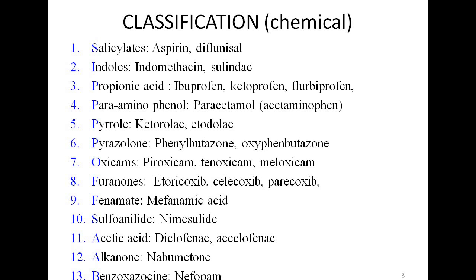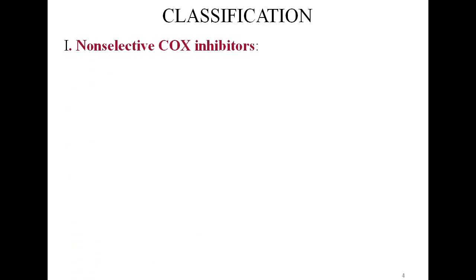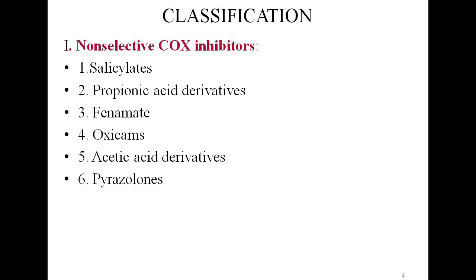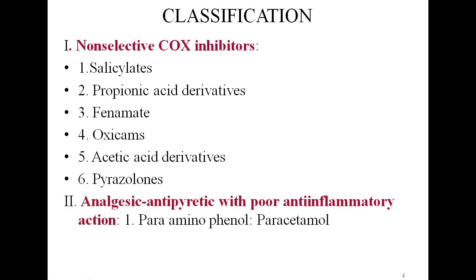When a question is asked on classifying NSAIDs and the basis for classification is not specified, we can use the next method of classification — based on whether they are selective COX-2 inhibitors, non-selective COX inhibitors, or whether they have anti-inflammatory action or not. Under the non-selective COX inhibitors, we have the salicylates (e.g., aspirin), propionic acid derivatives, fenamates, oxicams, acetic acid derivatives, and pyrazolones — meaning they inhibit both cyclooxygenase 1 and cyclooxygenase 2.